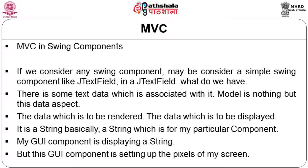In a JTextField, there is some text — that is the data associated with it. The model is nothing but this data aspect — the data which is to be rendered or displayed. It is basically a string value which is associated with that particular component.